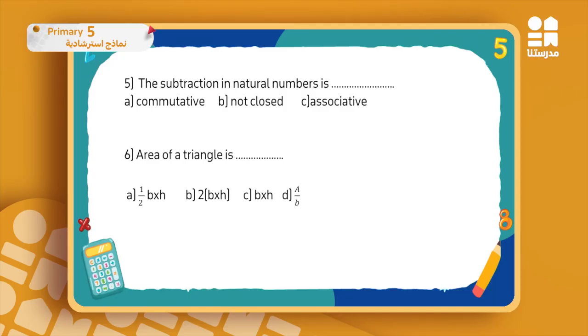Question five: is subtraction in natural numbers commutative, not closed, or associative? We said before that subtraction in N is not closed under N, it is not commutative, it is not associative, and it has no neutral identity element. So the answer will be letter B: not closed.